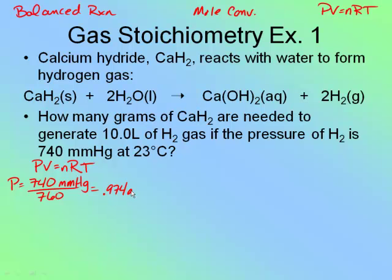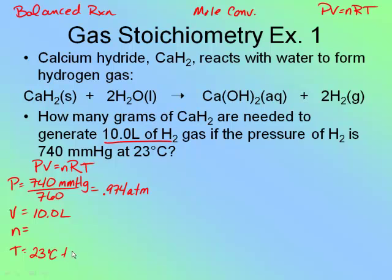Sig figs are not important here because you only count them in your final answer. The volume is 10 liters — that's given. Now, in previous PV = NRT problems we always had grams to work off of. This problem asks how many grams, so I don't have information for moles right now; I'll come back to that. The temperature is 23 degrees Celsius, so I add 273, giving 296 Kelvin.